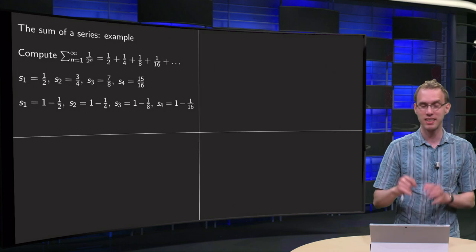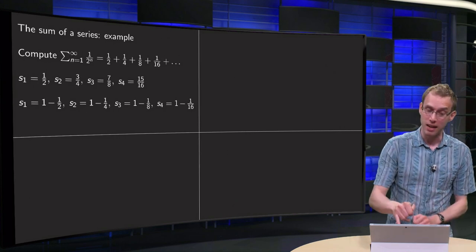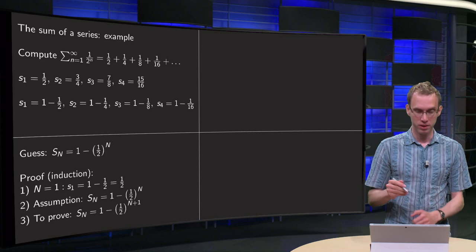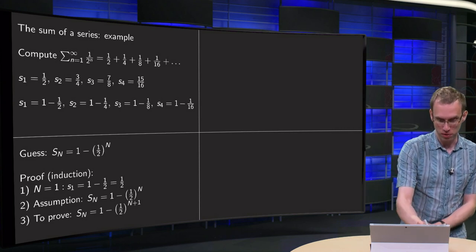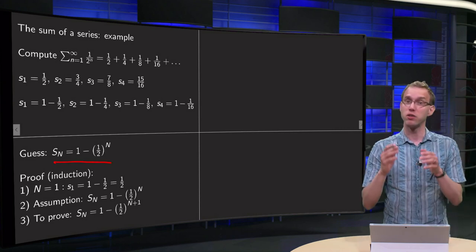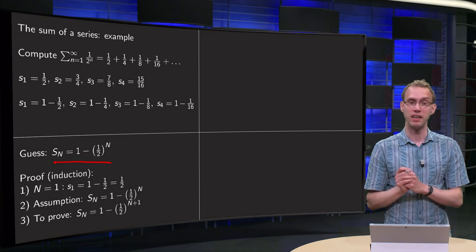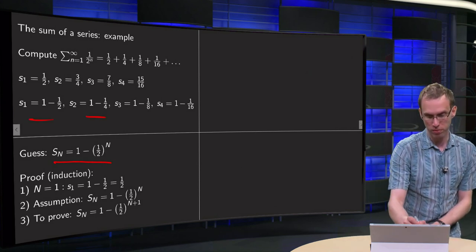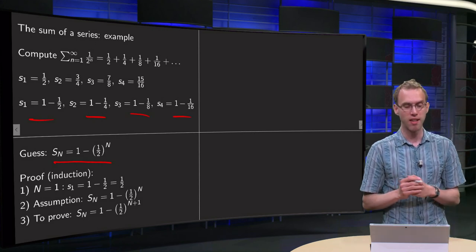So we see a pattern arise, and we can guess the value of the Nth partial sum. It looks like the Nth partial sum equals 1 minus (1/2) to the power N. And you see it works for all of these: 1 minus 1/2, 1 minus 1/4, 1 minus 1/8, 1 minus 1/16.